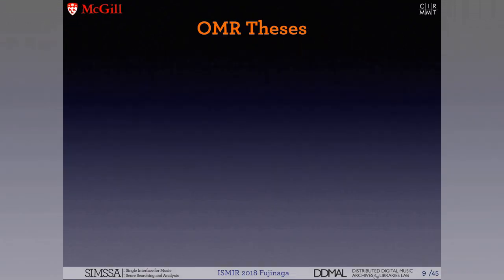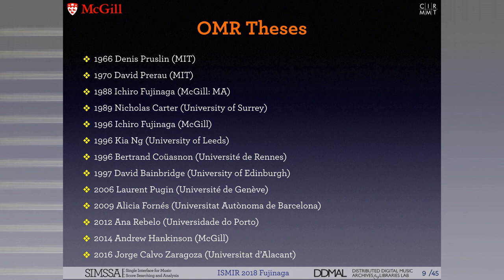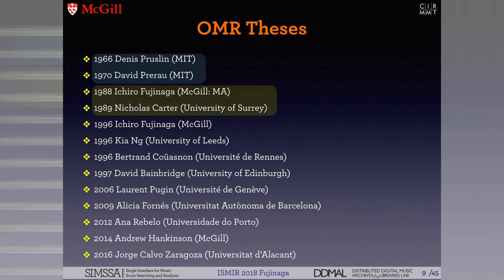Here are some of the OMR theses and dissertations since 1966. Notice they come in bursts: first period was 1966 and 1970, then an 18-19 year break when I did my master's and Nicholas Carter did his dissertation. Then another break of about seven years, then four of us all came out at the same time — all still working on this. Then another nine-year break, then Laurent Pugin and others. After that it's come along every two to three years, with the most recent one right in this room.